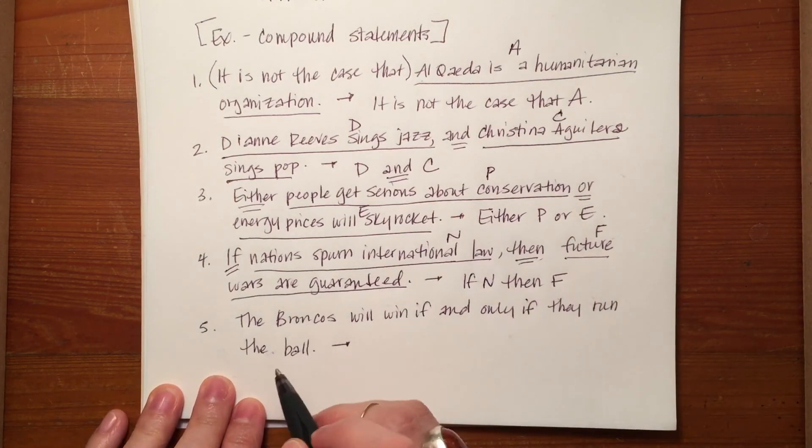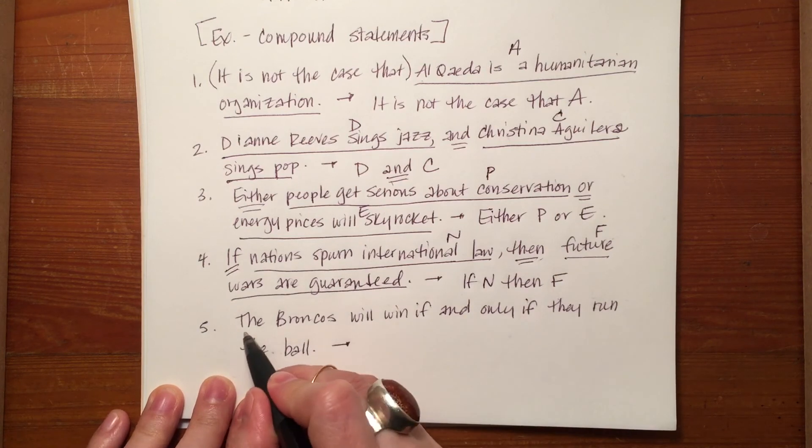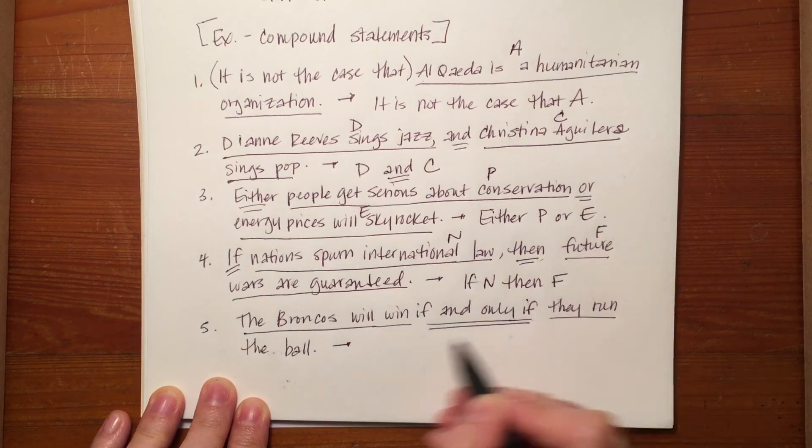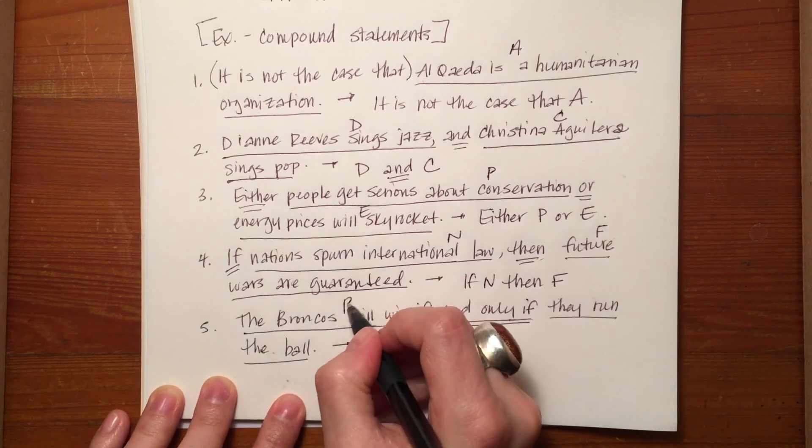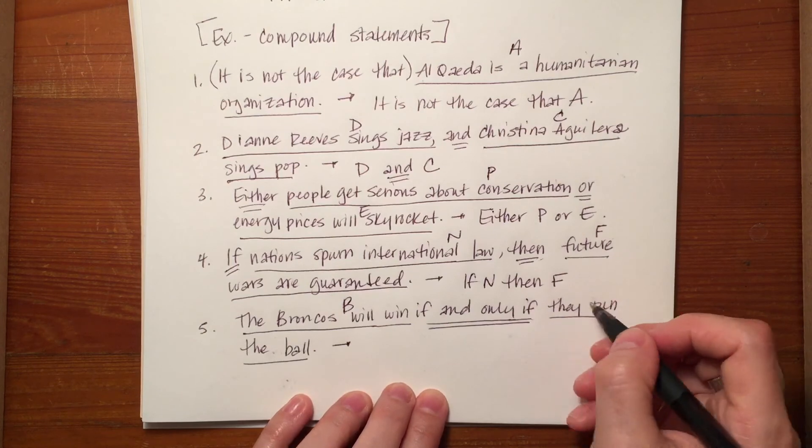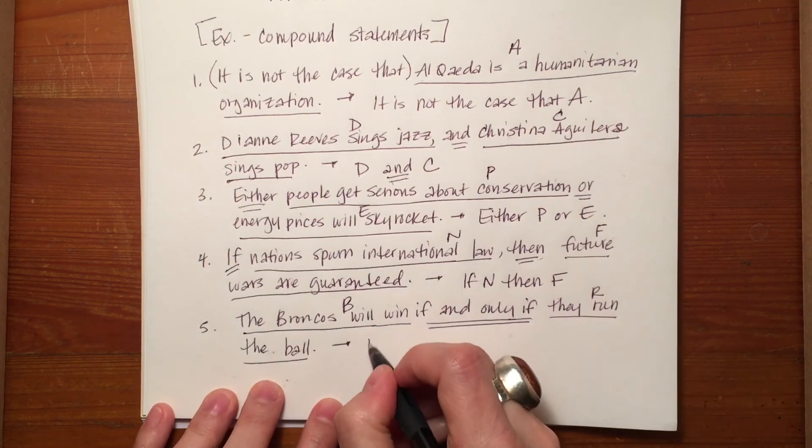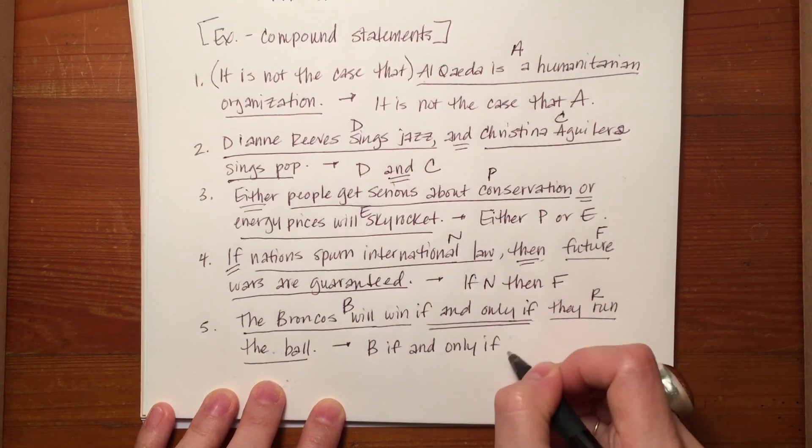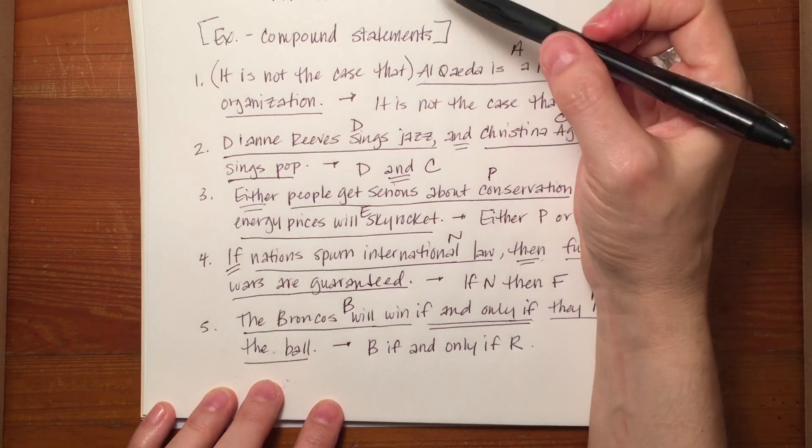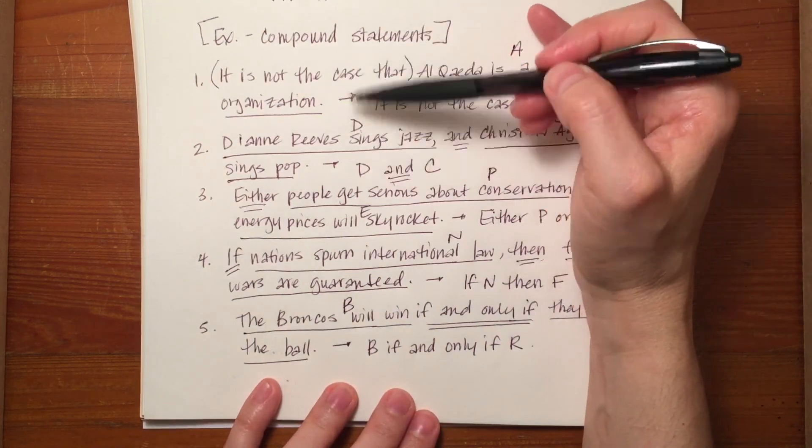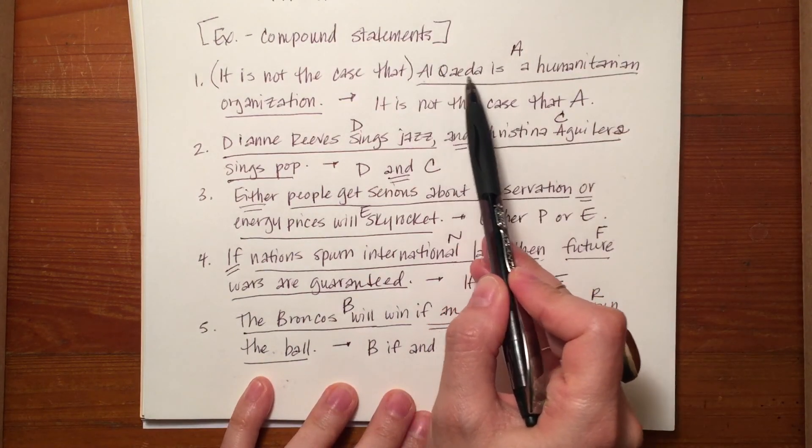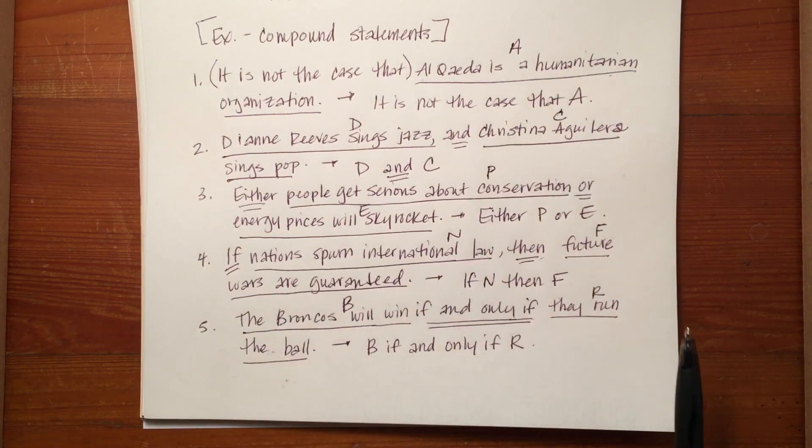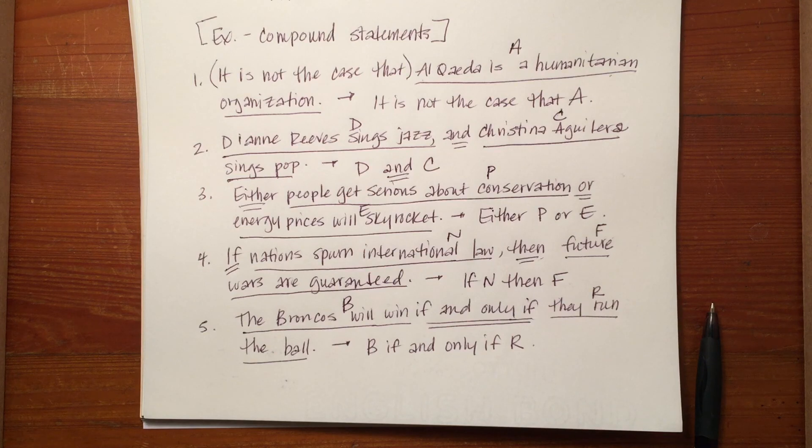And then the last one, the Broncos will win if and only if they run the ball. So B for Broncos will win, and R for run the ball becomes B if and only if R. So you can see how there's a different set of standard forms and how each entire statement is being symbolized by a letter. And that is the first part of propositional logic.